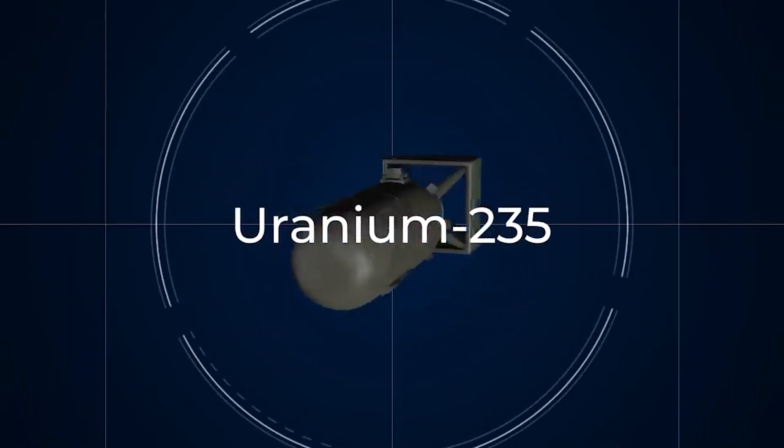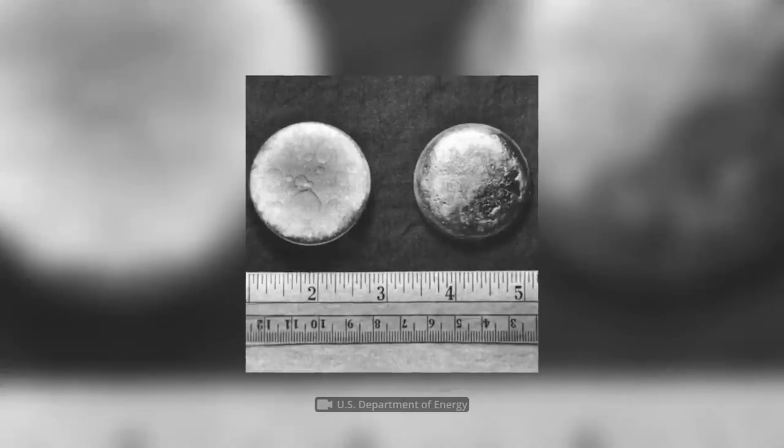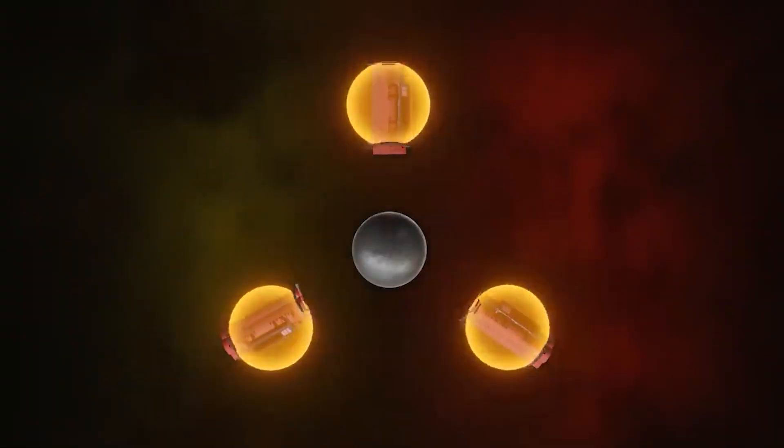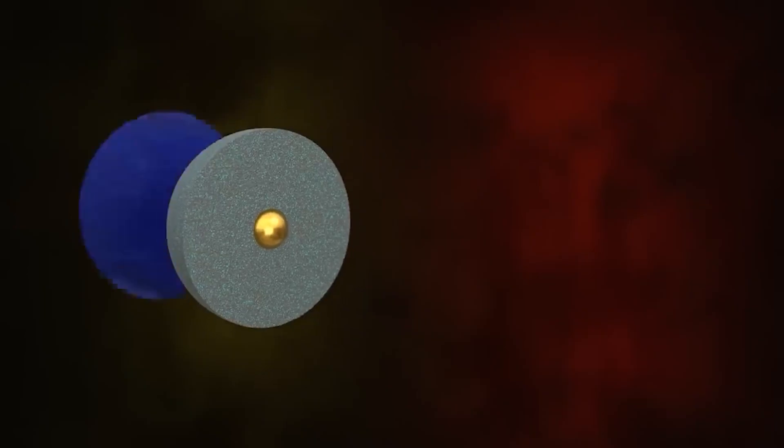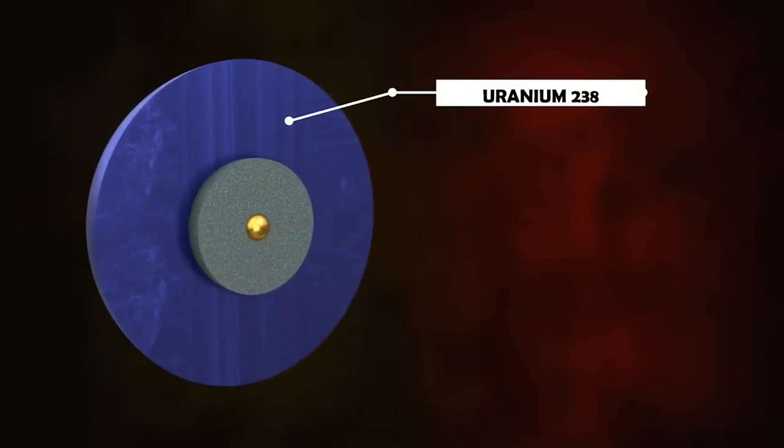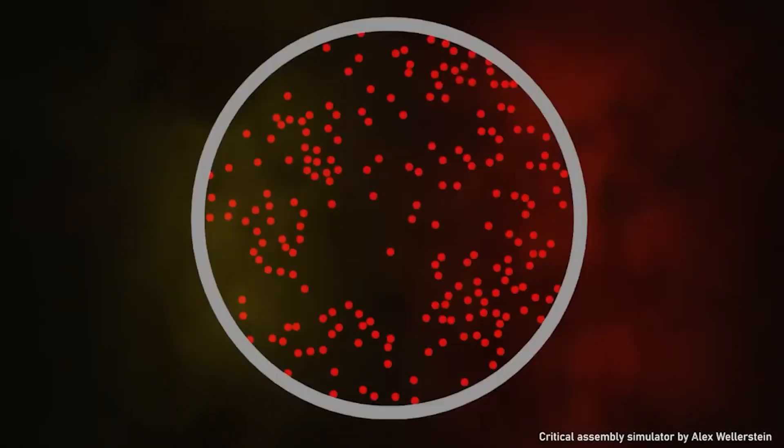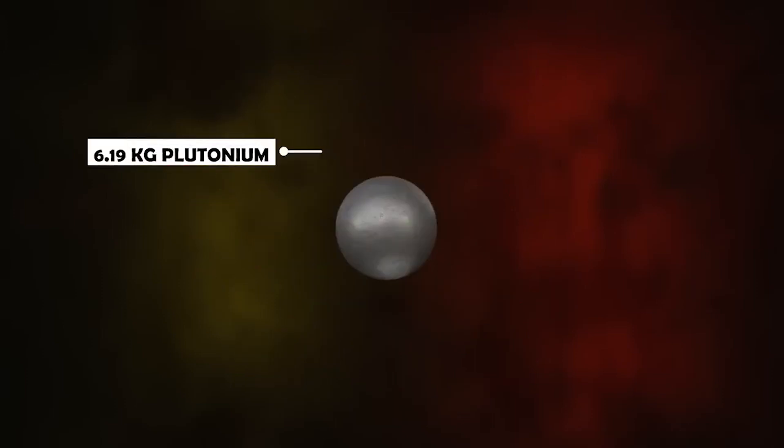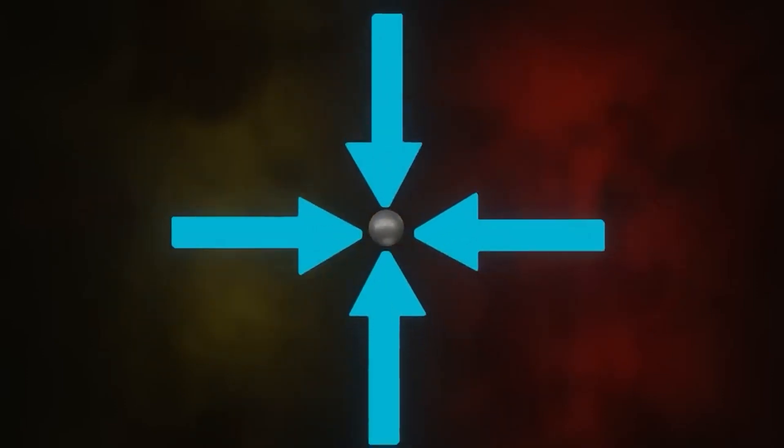In the second method, which is nuclear fusion, two smaller atoms, usually hydrogen isotopes such as deuterium and tritium, fuse at the same time to form a larger atom such as a helium isotope. This method is exactly the method by which the sun produces its energy. It creates bigger elements from smaller elements.